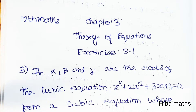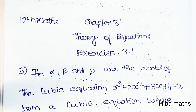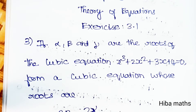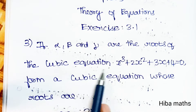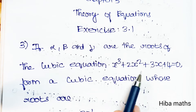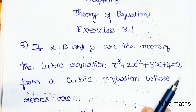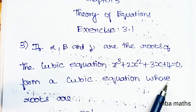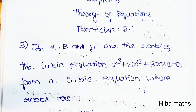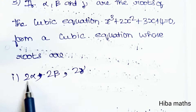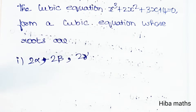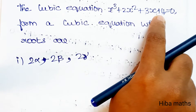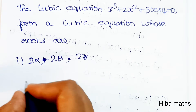Hello students, welcome to Plus 2 standard Maths, Chapter 3 Theory of Equations, Exercise 3.1, third question. If alpha, beta, and gamma are the roots of the cubic equation x³ + 2x² + 3x + 4 = 0, form a cubic equation whose roots are: first, 2α, 2β, 2γ.